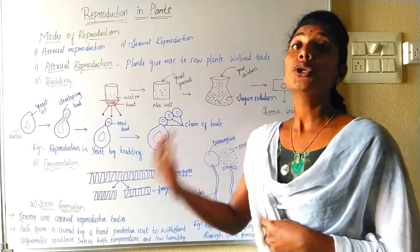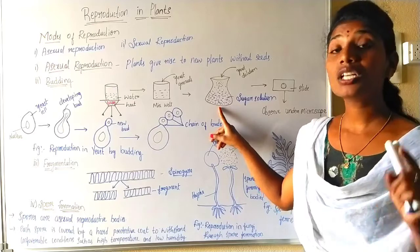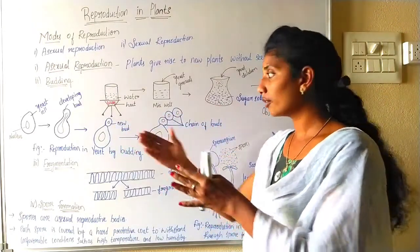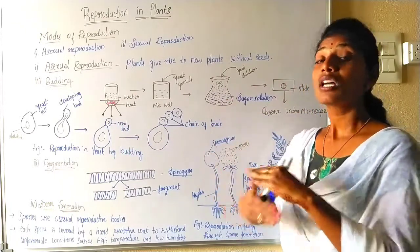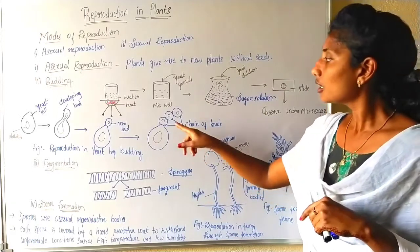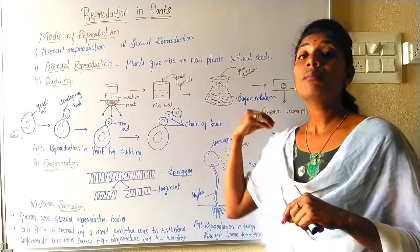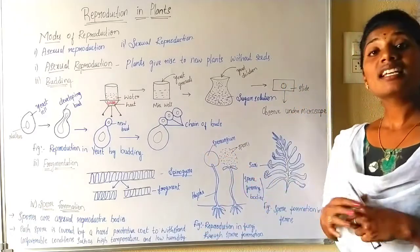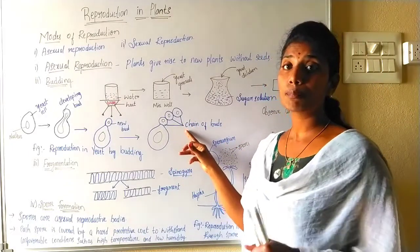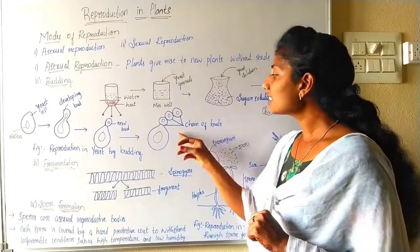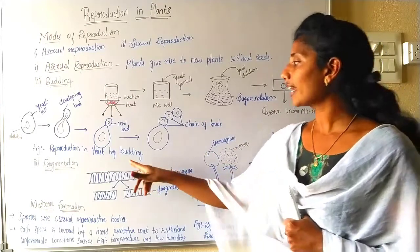This new bud will act as a new yeast cell, and it will also grow and multiply whenever it gets favorable conditions and nutrition. If you leave the procedure for a still longer duration, you can see that the new bud will also start multiplying and will form a few more buds. A chain of buds will be formed, and each bud in this chain will become a new yeast cell. This mode of reproduction, where bud formation takes place and the bud is converted into a new organism, is called budding.